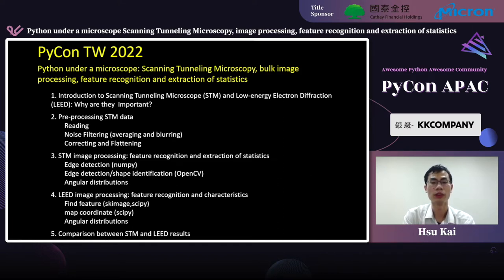First, I will introduce two commonly used techniques in surface science: scanning tunneling microscope and low-energy electron diffraction. Then, I will talk about how to preprocess and process STM data, and then apply feature recognition and extraction of statistics. Then, I will talk about LEED image processing and applied feature recognition again. I will extract information and convert those information into a similar plot. At the end, I'm going to compare the results from both techniques.